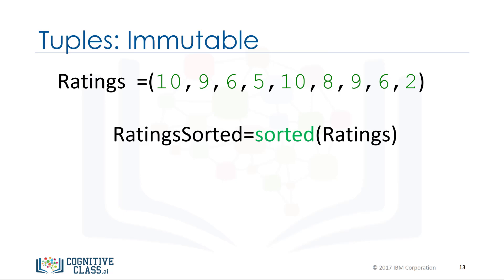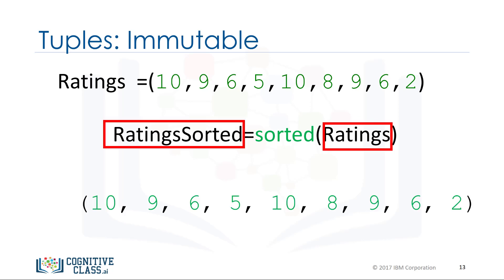As a consequence of immutability, if we would like to manipulate a tuple, we must create a new tuple instead. For example, if we would like to sort a tuple, we use the function sorted. The input is the original tuple and the output is a new sorted tuple. For more on functions, see our video on functions.